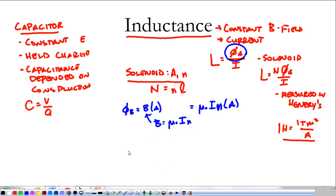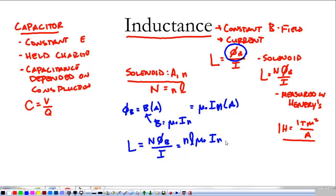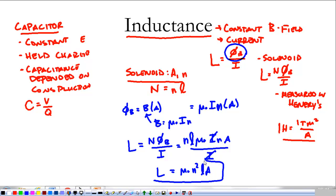If we want the inductance of a solenoid, it equals N_total times the magnetic flux divided by the current. That's n·l times μ₀·I·n·A, divided by the current. The currents cancel out, and what we have for the inductance of a solenoid is μ₀·n²·l·A. We see that inductance only depends on the number of turns per unit length, the length, and the area of the solenoid.